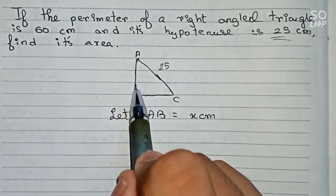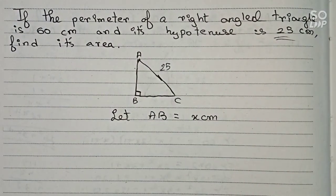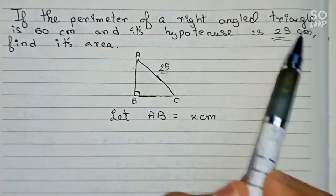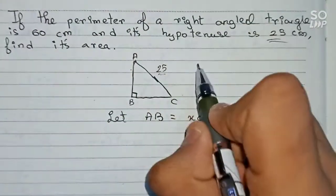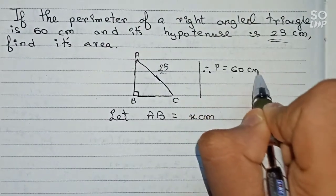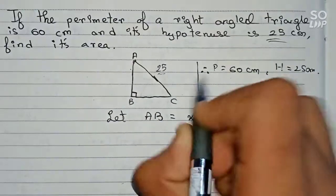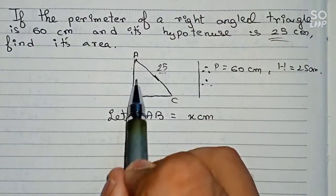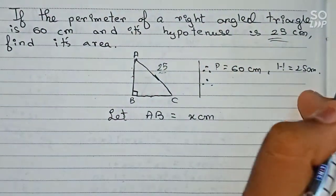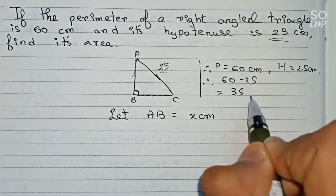We are taking this side as x centimeters. The other side — since the hypotenuse is 25 and the perimeter is 60 centimeters — the sum of the other two sides will be 60 minus 25, which equals 35 centimeters.